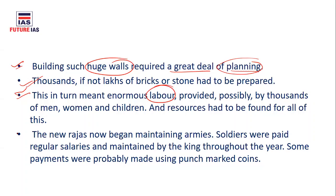The new Rajas also began maintaining armies, because once they built the fortification, they needed to protect it from enemies. This is different from the Rigvedic period Rajas, who did not maintain any army — people chose them and they were capable of defending themselves. But now, these Rajas maintained standing armies with soldiers paid regular salaries through coins or other entitlements like land.